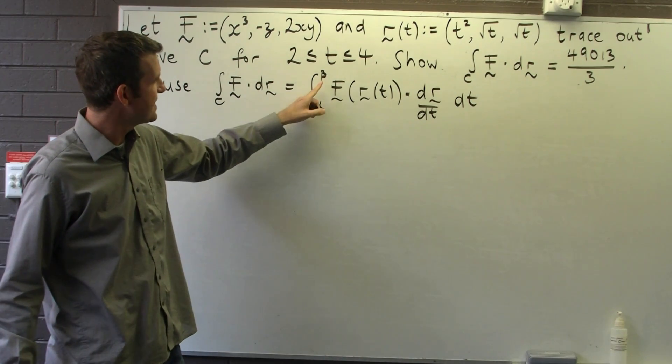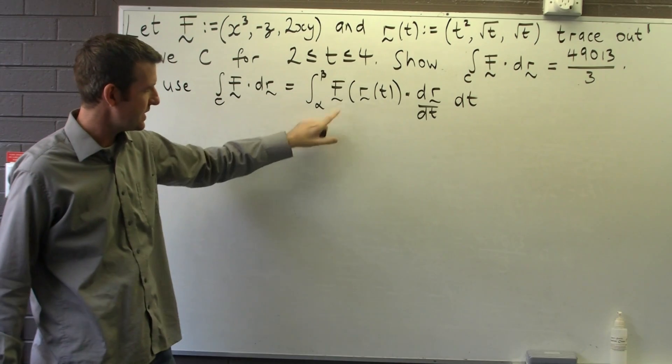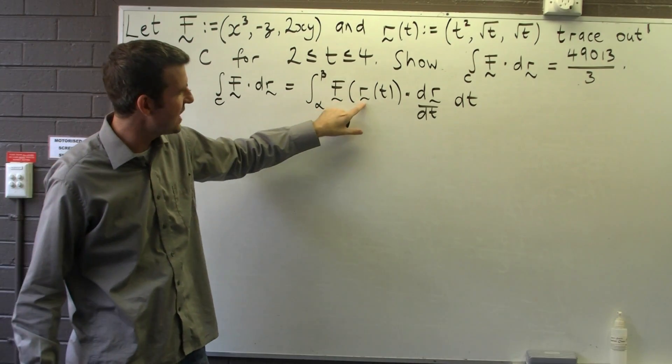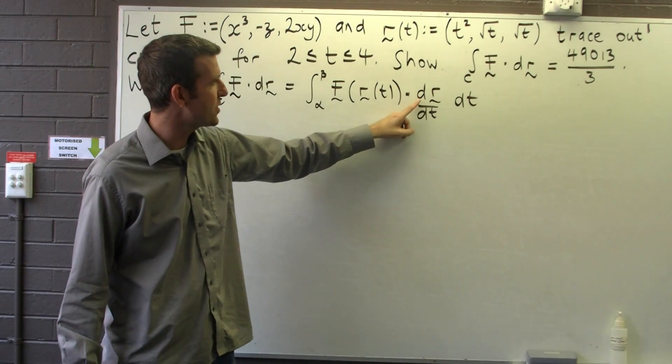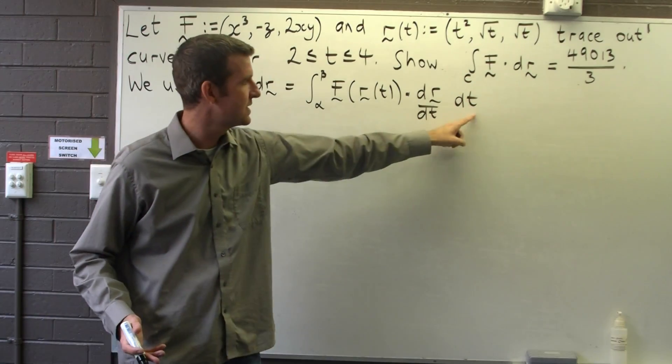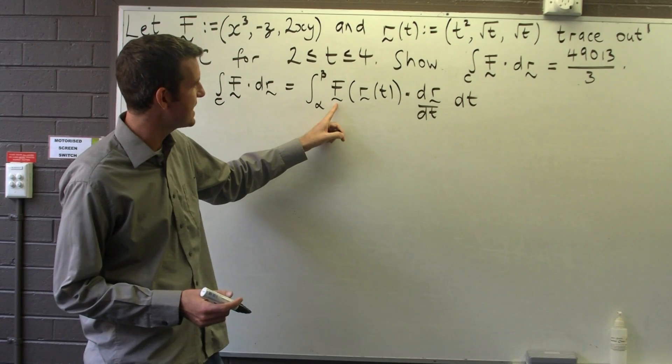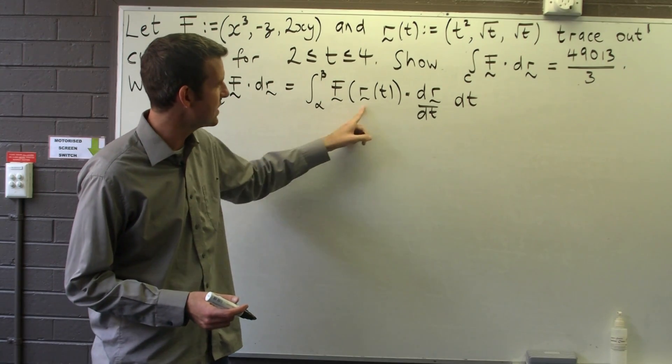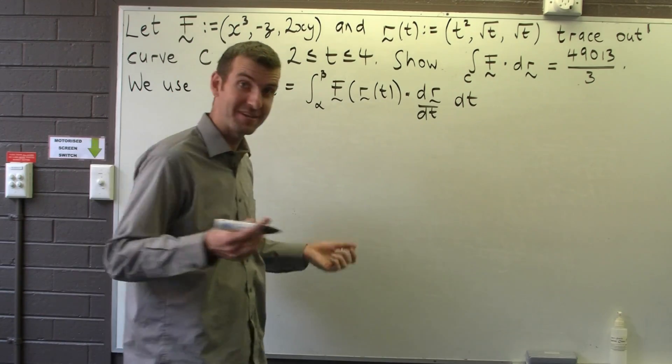Here the alpha and the beta are just going to be the limits of integration. I'm evaluating F along the parameterization r, and I'm taking dot product with dr/dt, and I'm integrating everything with respect to t. So all we really need to do here is work out F evaluated along r, work out dr/dt, dot product, and then integrate.